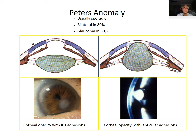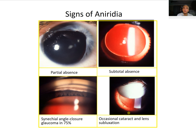Peter's anomaly represents the most severe form of anterior segment developmental abnormality. During anterior segment development the iris is normally attached to the cornea and then separates, but in Peter's anomaly there is a central corneal defect producing corneal scarring, and in severe cases the lens may be attached to the cornea. Angle anomalies are also seen and this is considered the most severe form of the cleavage syndrome.